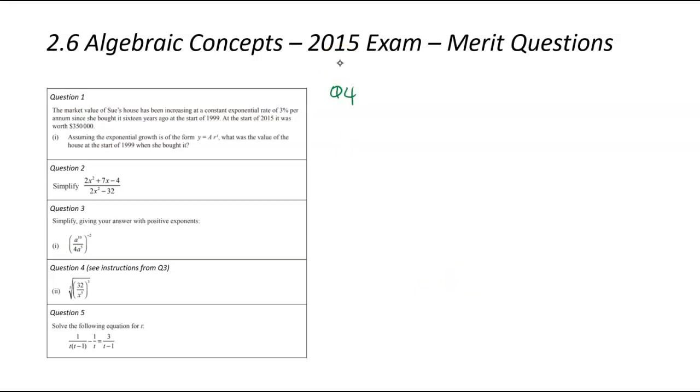Okay, we are now looking at question number 4. And again, another indice question. They love putting merit questions with an indice type of vibe. So the fifth root of 32 divided by x to the power of 5, and that there is going to be cubed. So the first thing I'm going to do is I'm going to switch the third into a fraction power. So that there is going to be 32 divided by x to the power of 5, to the power of 3 divided by 5 as a fraction.